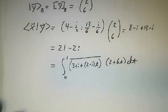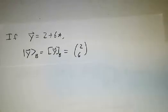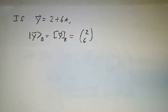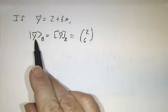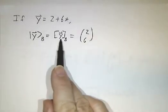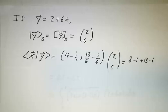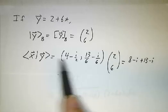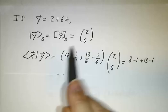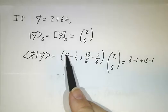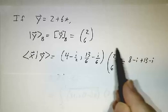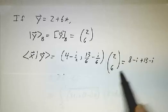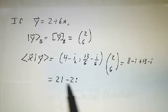So what good is that expression? If we have another vector y = 2 + 6t, then the coordinates of the ket y, or the coordinates of the vector y, are 2 and 6. We can compute the inner product of x with y by taking the row that's the bra times the column that's the ket. We multiply it out and get 21 - 2i.